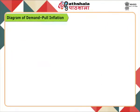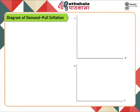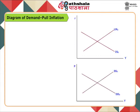Demand-pull inflation is explained through a diagram with two parts: an upper panel and a lower panel. In the upper panel, IS and LM curves are shown, and in the lower panel, aggregate demand and supply curves are shown. Initially, the equilibrium is at Y0 level of output, at the intersection of IS0 and LM0 in the upper panel. This equilibrium is also shown in the lower panel at the intersection of DD0 and SS0, with the level of output at Y0 and price level P0.